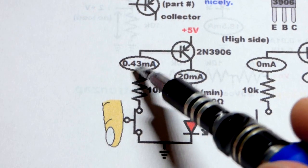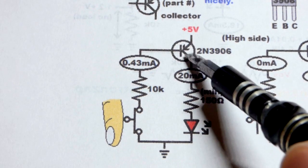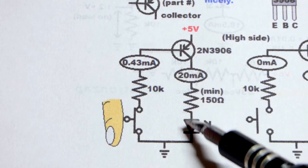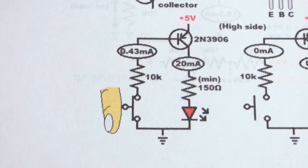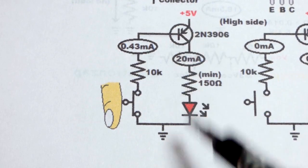So, 0.43 times 100 is 43 milliamps, which is higher than 20 milliamps. The transistor won't be what limits the current. In this case, the load will be, because the load is limiting the current more than the transistor. So, the transistor is fully on. It's saturated.